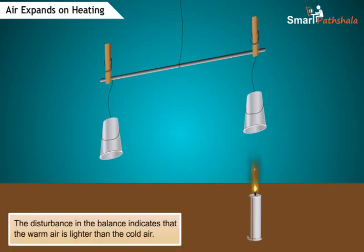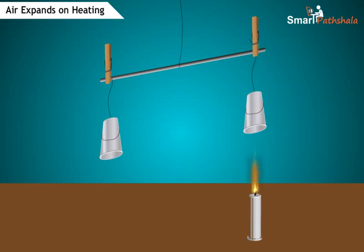The disturbance in the balance indicates that warm air is lighter than cold air. As we already know, on heating, air expands and occupies more space. When the same amount of air occupies more space, it becomes lighter.